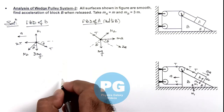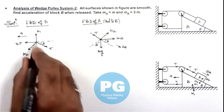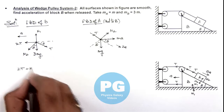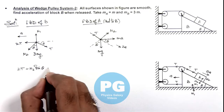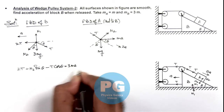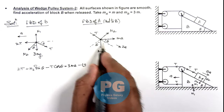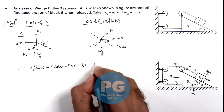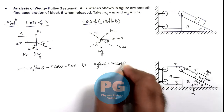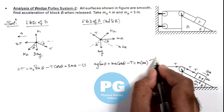We can now write the equations of motion for the blocks. For block B, toward the left: 2T + N2·sinθ − T·cosθ = 3m·ay. This is Equation 1. For block A, along the line of motion: m·g·sinθ + m·ay·cosθ − T = m·(2ay). This is Equation 2.